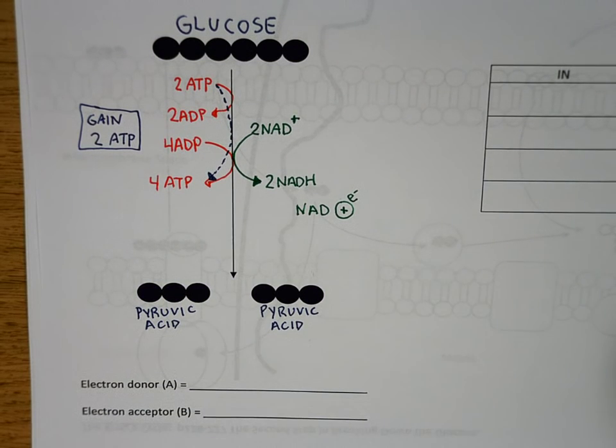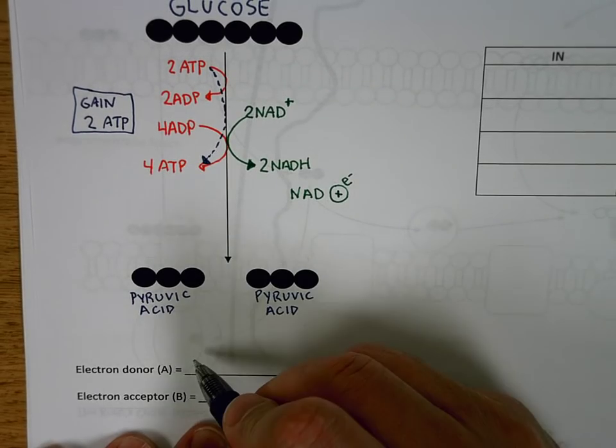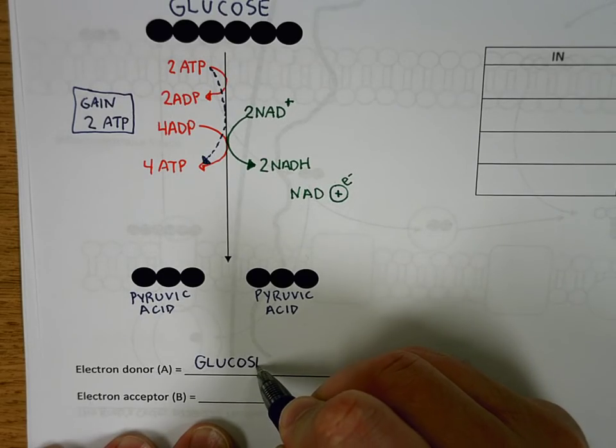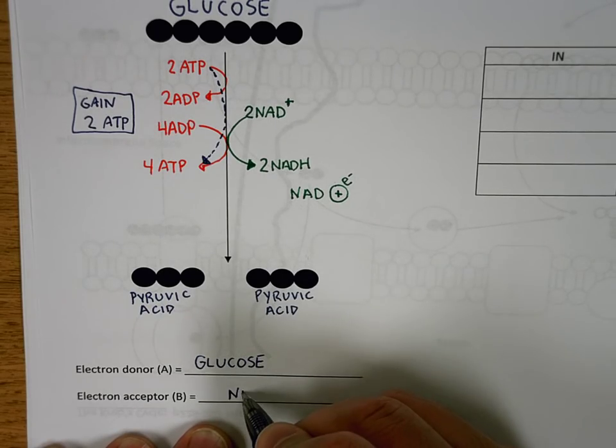We always like to talk about it in terms of what was the electron donor in this story. Well, the electron donor was glucose. That's where the electrons were at the beginning of the story. For those electrons that moved, what was the electron acceptor? NADH.